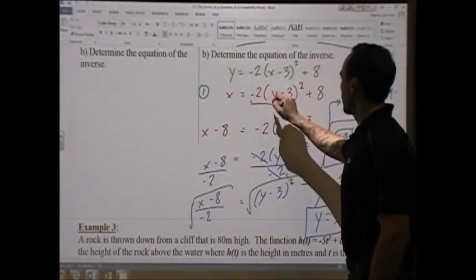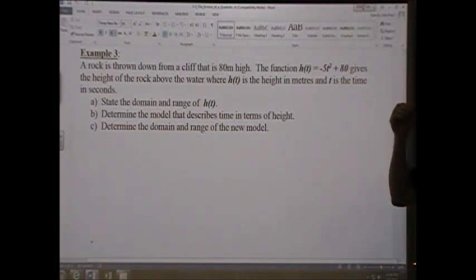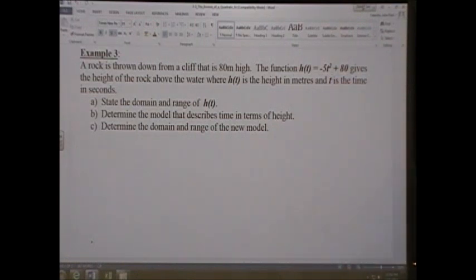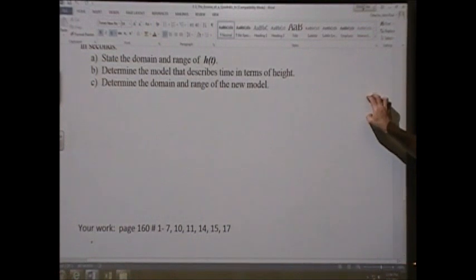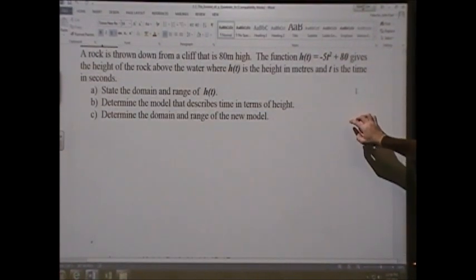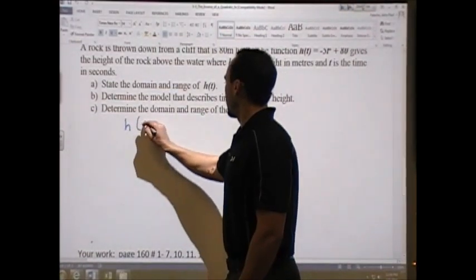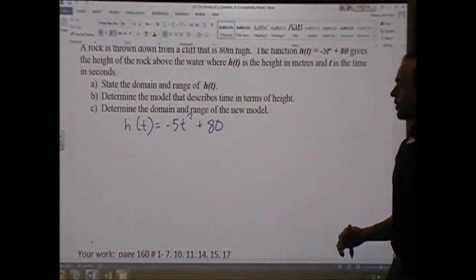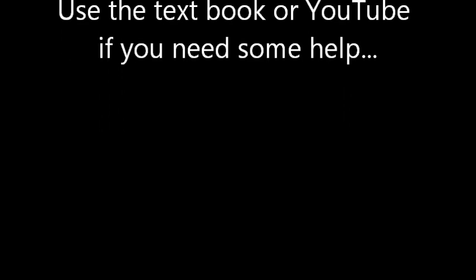Last example — Example 3: a rock is thrown down from a cliff that is 80 meters high. The function h(t) = -5t² + 80 gives the height of the rock above the water, where h(t) is height in meters and t is time in seconds. The problem asks to state the domain and range of h(t), determine the model describing time in terms of height, and find the domain and range of the new model. First question: is this in factored form, vertex form, or standard form?